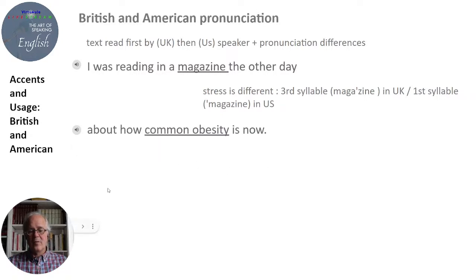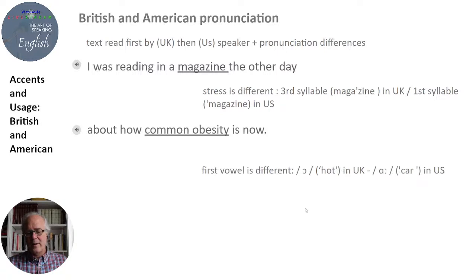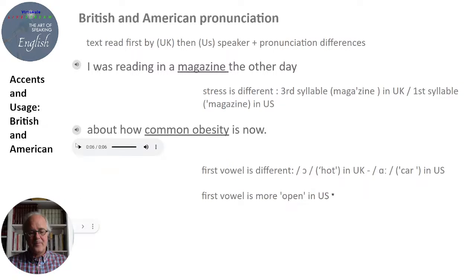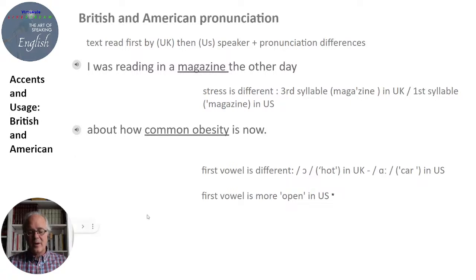'About how common obesity is now.' — 'About how common obesity is now.' The first vowel in 'common' — it's like 'hot' — 'common' — a little deeper in British. In American English it's more like 'ca-' — 'common.' And the first vowel in 'obesity' is more open in American English: 'obesity' versus the British near-schwa: 'obesity.'